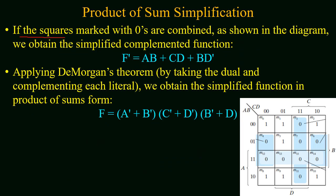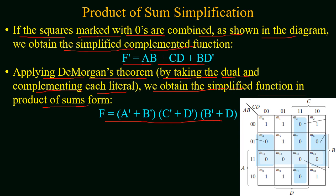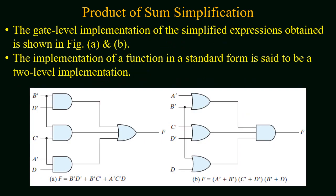Now if we make a group of all the squares which are marked with zeros, as shown in the diagram, we will obtain a simplified function which will be f prime, and this function will be in the form of sum of product. Now we will again take the complement of f prime and will use De Morgan's theorem — first we will take the dual of the function and then complement each literal. We will then obtain a simplified function in the product of sum form.